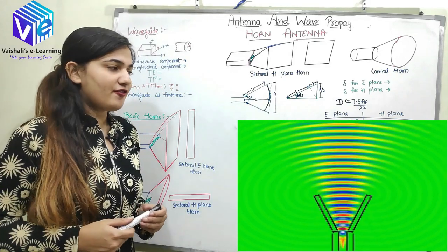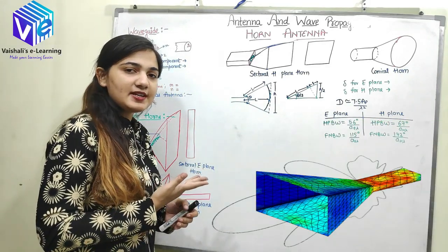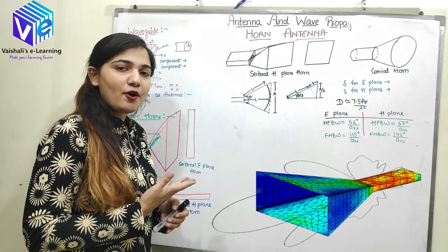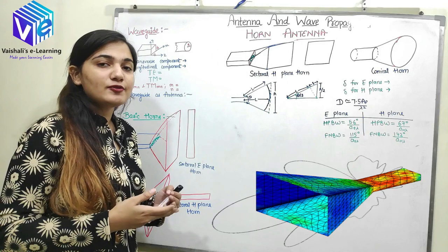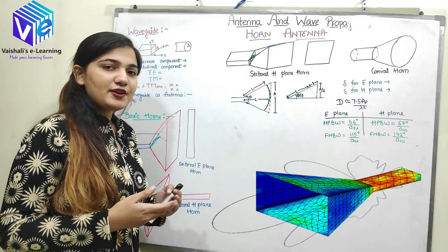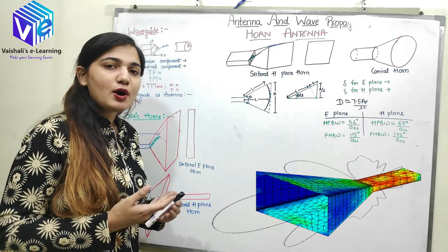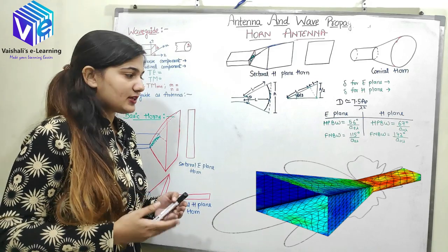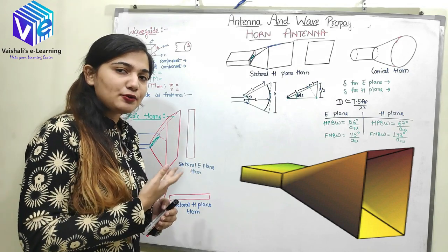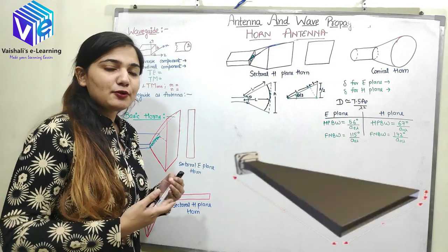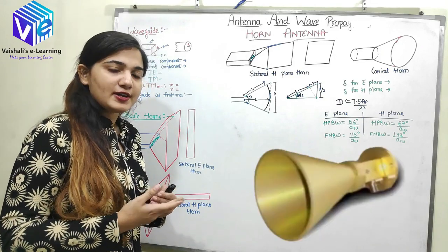There are various types of horn antenna. For your reference, I have given the pictorial representation as to how a horn antenna looks like. You can see and make a picture in your mind as to how a horn antenna looks. These are various kinds: sectorial E-plane horn, sectorial H-plane horn, pyramidal horn, and conical horn.